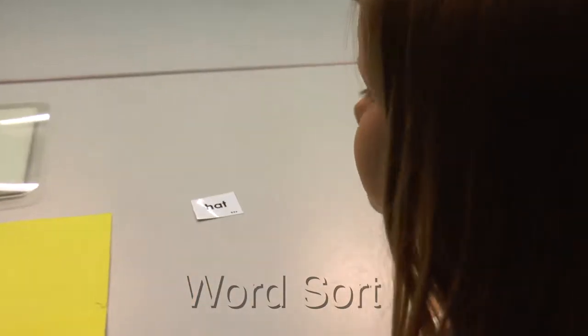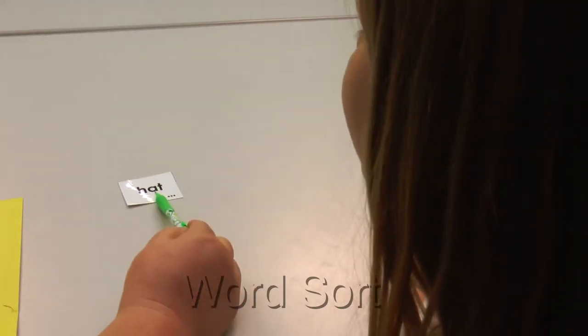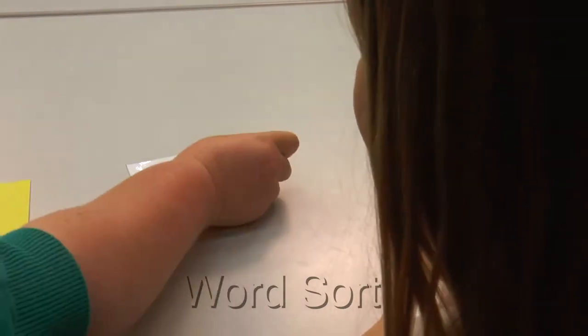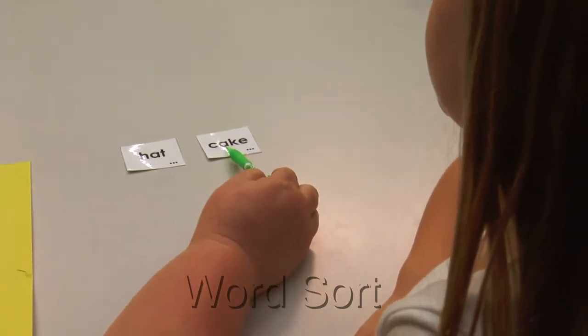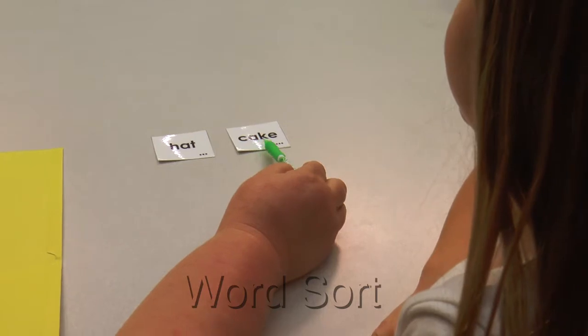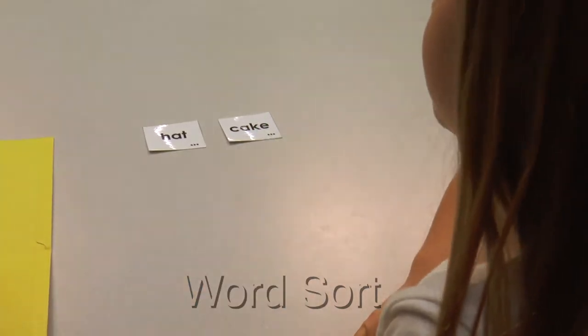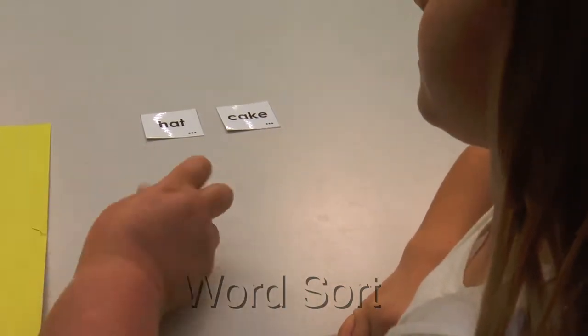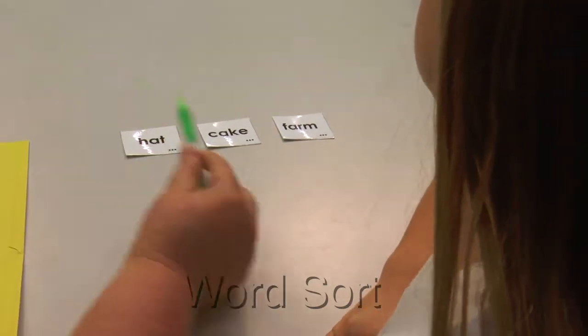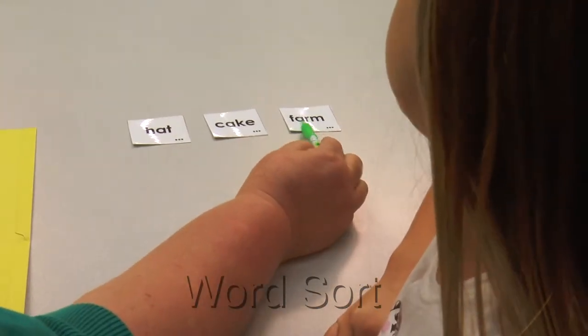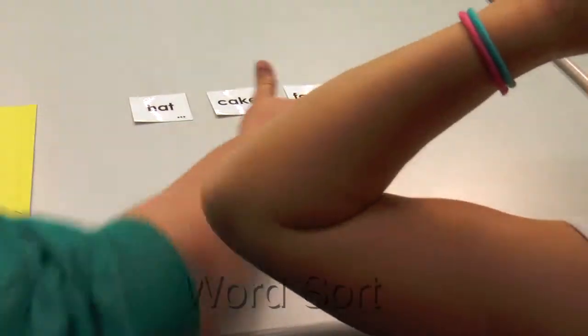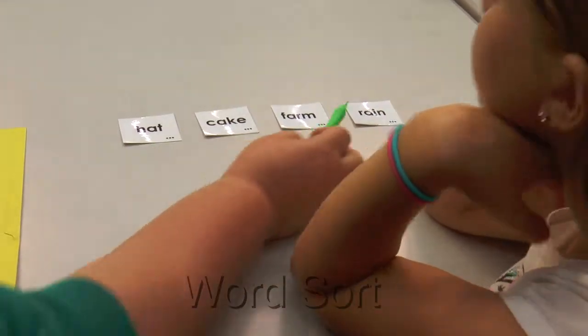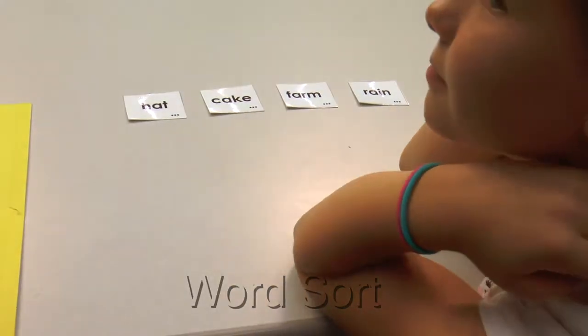Good, and remember the vowel in hat says what? Good. What's your word? Cake, good. And the vowel in cake says 'a' because we've got an a-consonant-e, right? The 'a' makes the name, makes the 'a' say its name. Okay, what's the word? Farm. The vowel in farm says 'r', because the bossy r, right? And then what's our last one? Rain. And our vowel in this one says what? 'A', because the 'i' is silent.